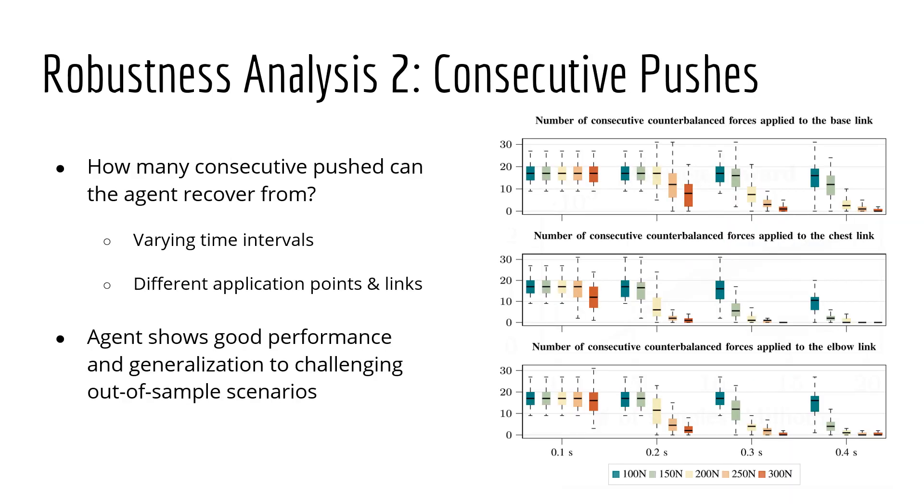We also evaluate robustness to sequences of external pushes. In this experiment, the robot is subject to pushes with varying time intervals. We then count the number of consecutive counterbalanced forces, controlling for force magnitude, push duration, and application links. As shown in the box plots on the right, the agent shows good performance and robustness to out-of-sample scenarios also in this case.